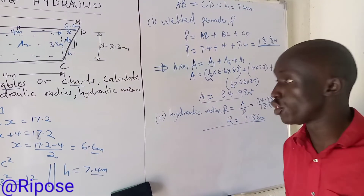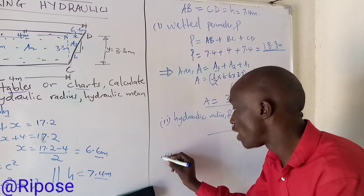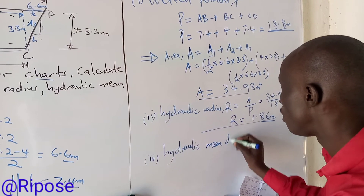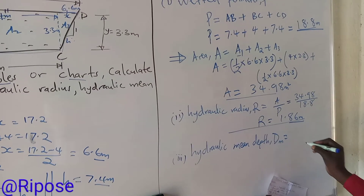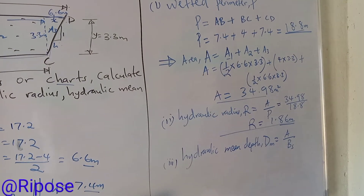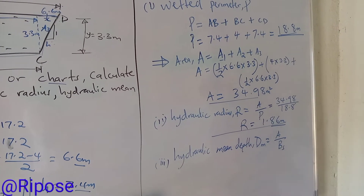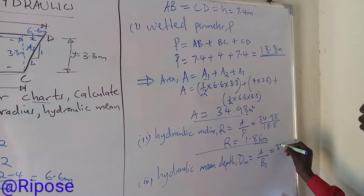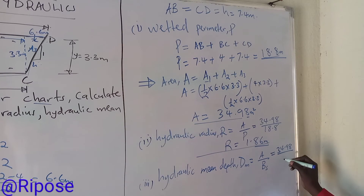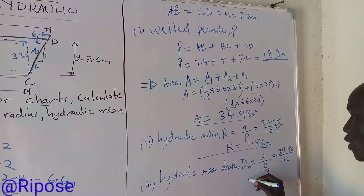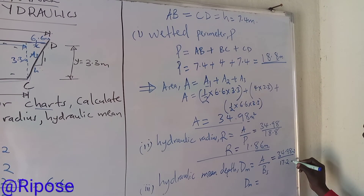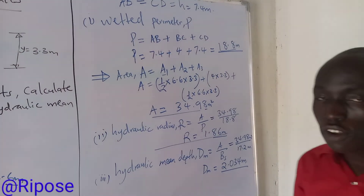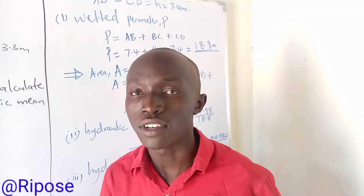Finally, number three, we find the hydraulic mean depth. The hydraulic mean depth dm is defined as the ratio of the area to the surface width. Our area is 34.98 square meters and the surface width given is 17.2 meters. So dm equals 34.98 divided by 17.2, and when we compute that, our hydraulic mean depth is 2.034 meters. Thank you very much for watching. See you next time for the next video.